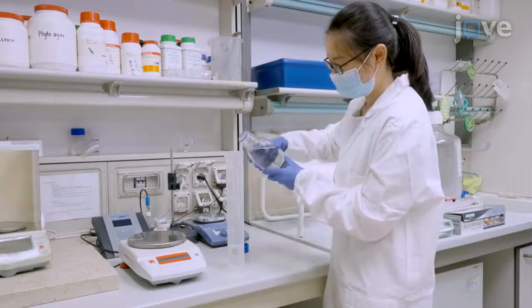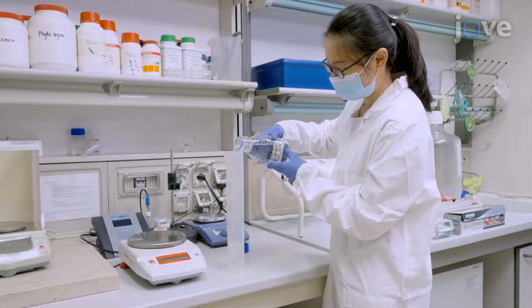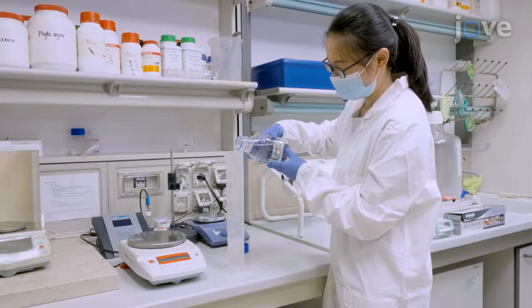To begin, prepare 70% ethanol by adding 95% technical ethanol to distilled water and mixing thoroughly.